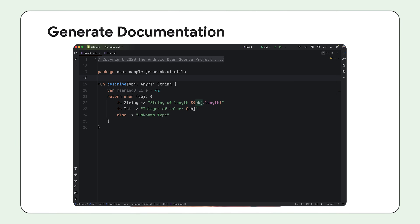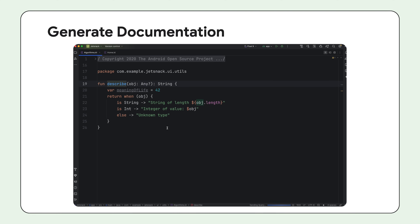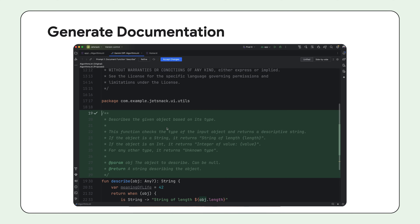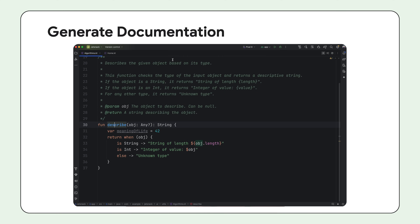Lastly, Gemini makes documenting your code a breeze. Select the code snippet, right-click, and choose Gemini Document Function. Gemini will generate documentation that you can then refine before accepting.